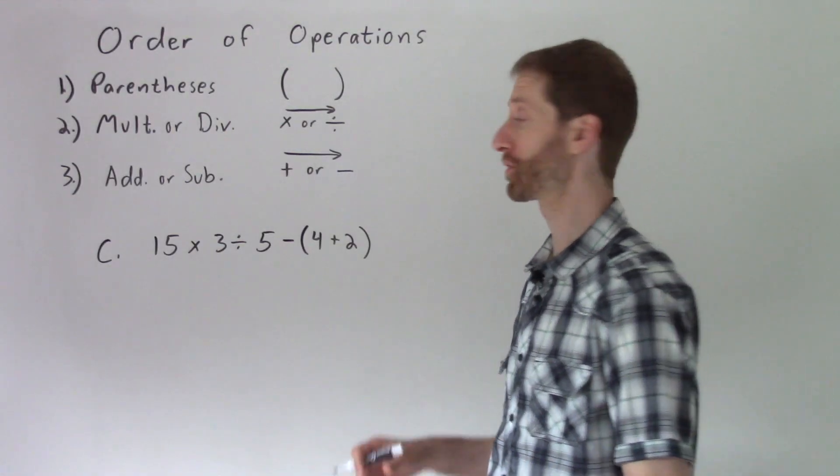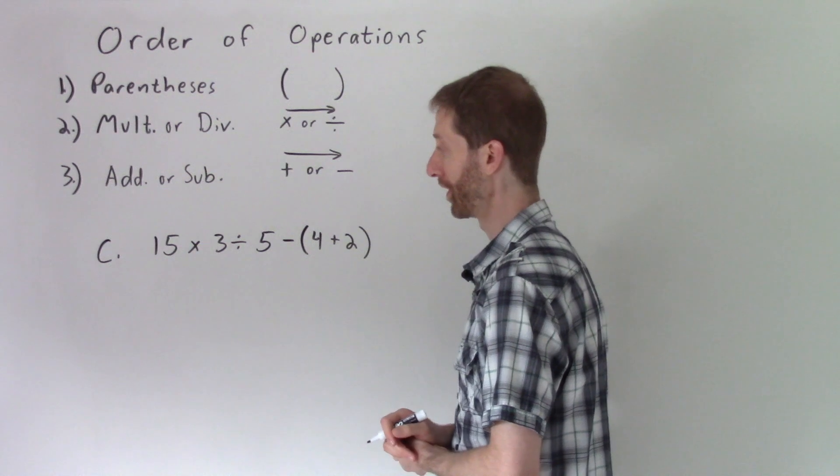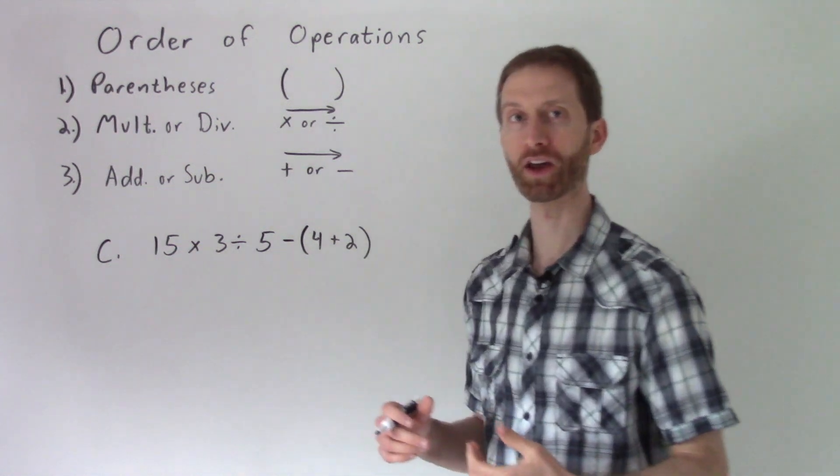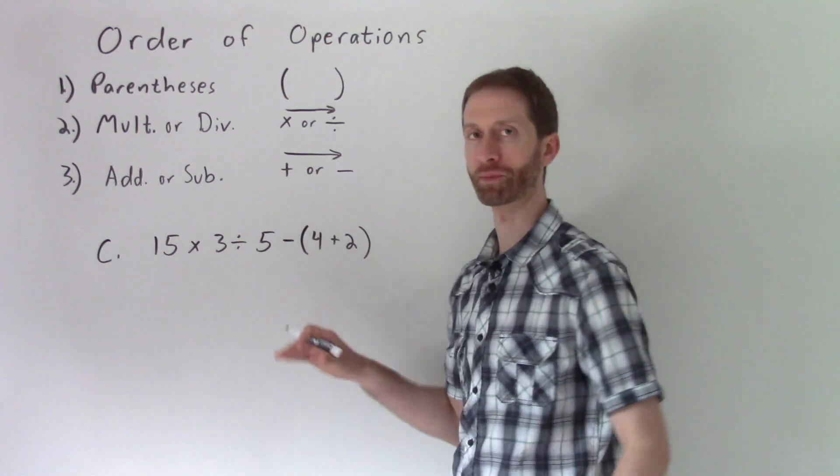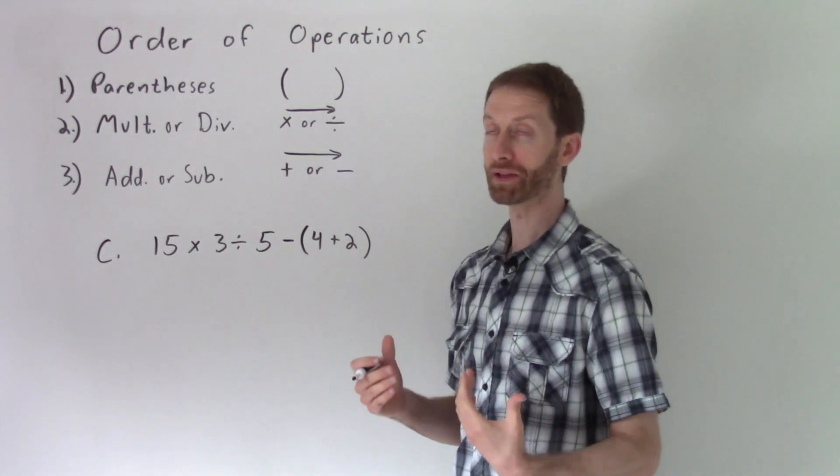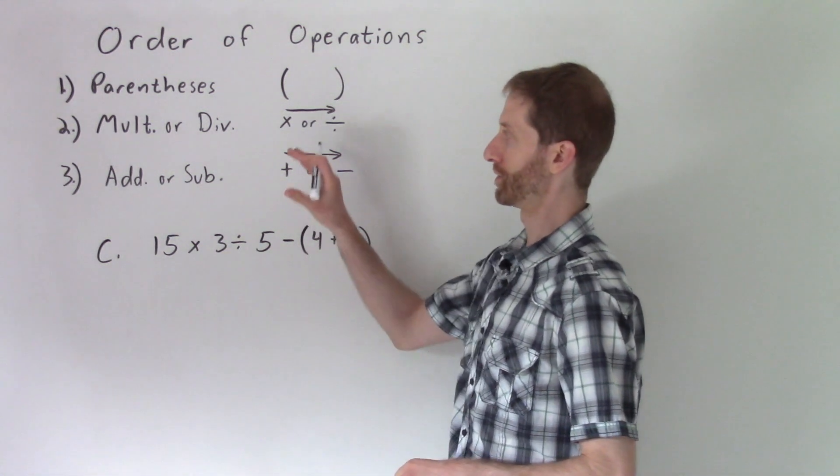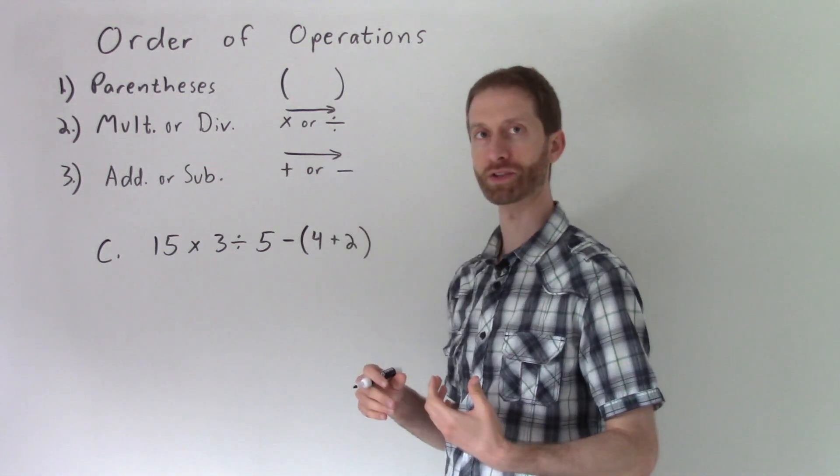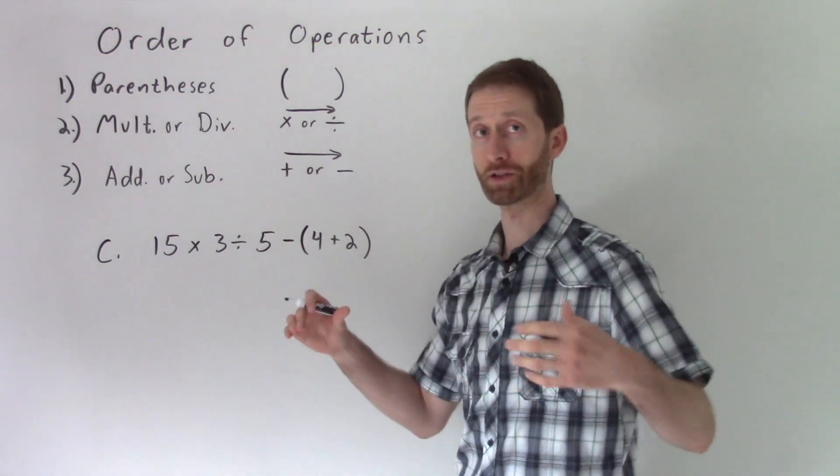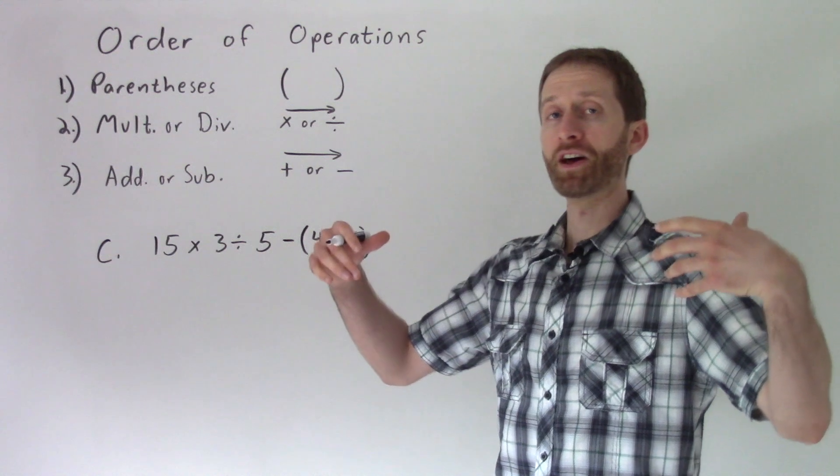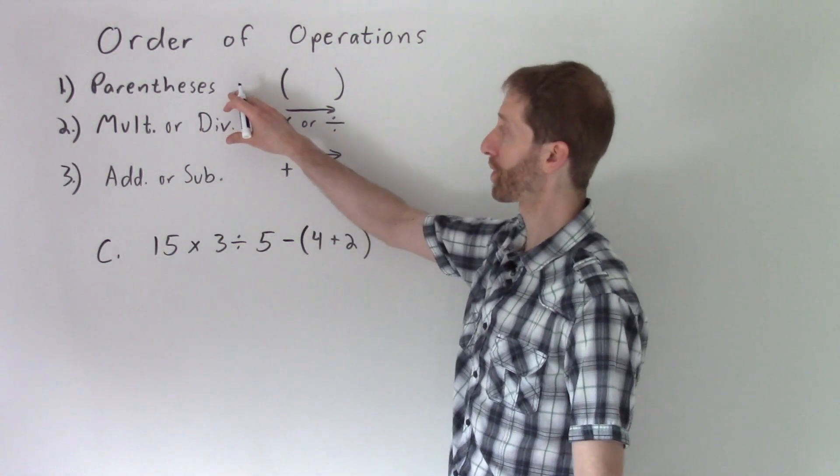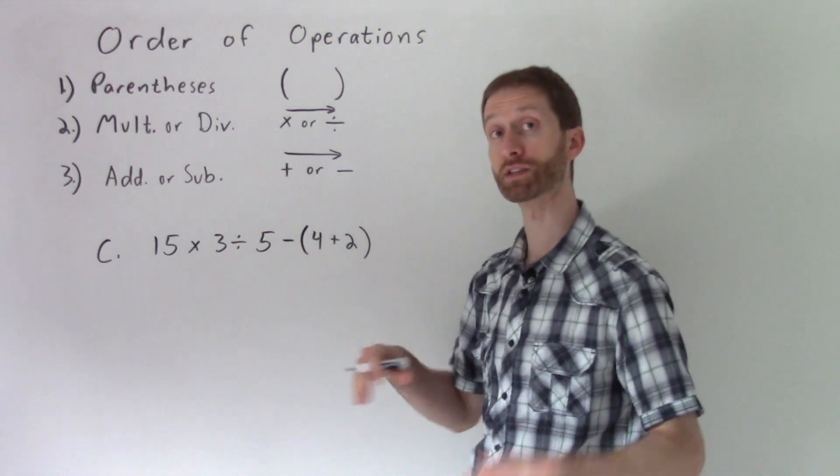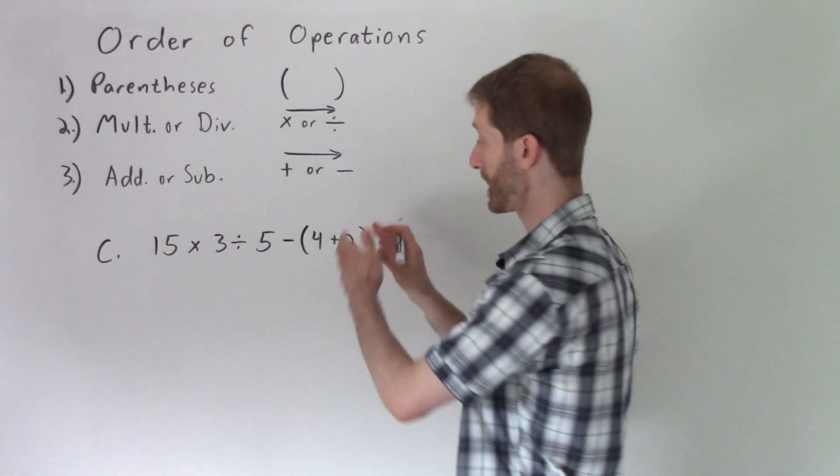And now for the last order of operations example here, before we get to one heck of a gnarly word problem. So this order of operations problem kind of tests our ability to apply the order of operations to a little bit more operations than you might be used to. But take a deep breath in, let it out. You'll be just fine. Here we go. We're going to use our rules. Parentheses first. We see we have parentheses. So we do the order of operations within the parentheses.